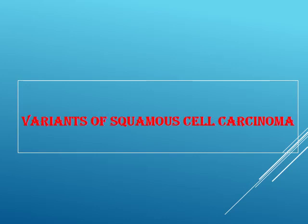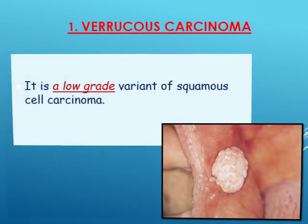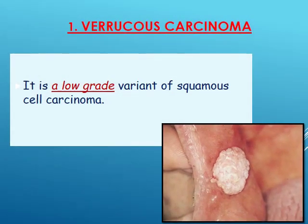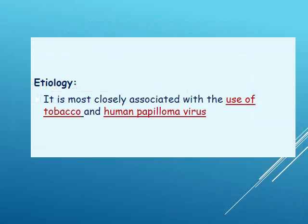Squamous cell carcinoma has variants. The first variant is verrucous carcinoma, which is considered a low-grade variant of squamous cell carcinoma. Studies relate it to the use of tobacco or snuff dipping. There are also studies relating it to human papilloma virus, as lesions caused by HPV may be malignant or benign.